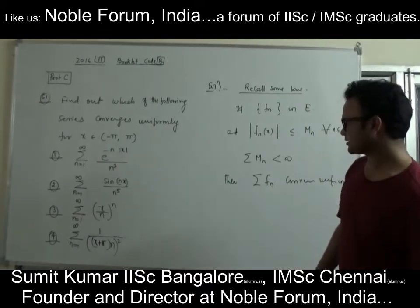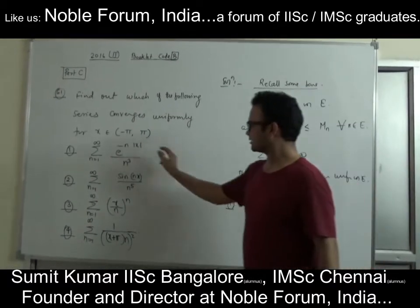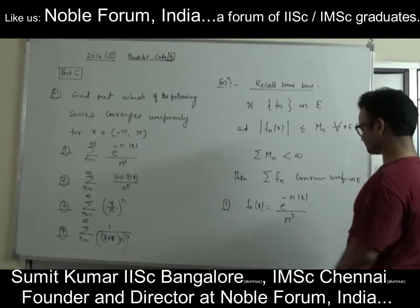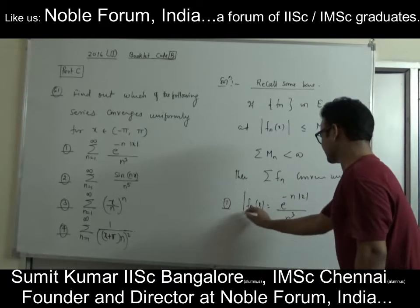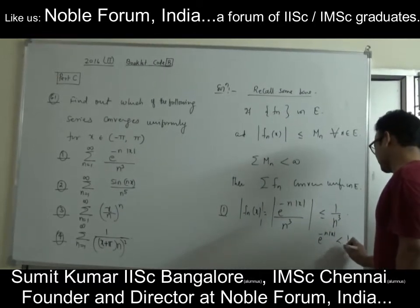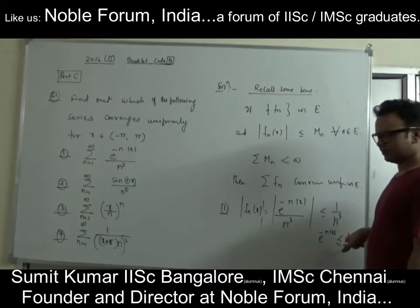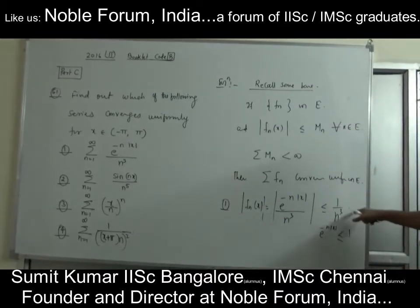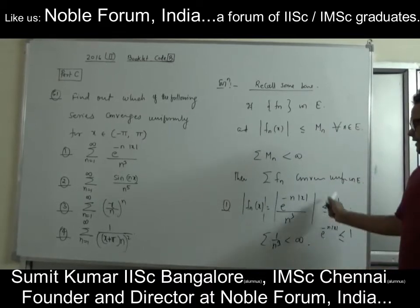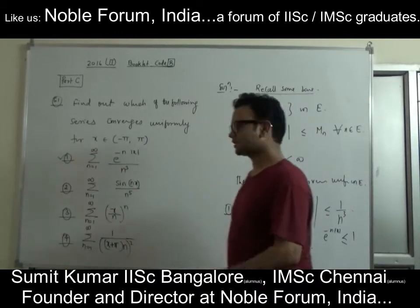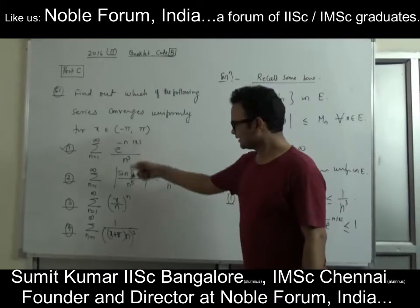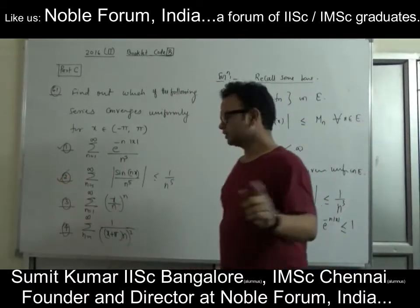The theorem I'm going to use is the M-test: if you have a sequence of functions on some space E, and |f_n(x)| ≤ M_n for all x in E, and the series ΣM_n converges, then the series converges uniformly. That's the M-test — please go through it. For the first option, f_n(x) = e^(−nx)/n^q. Taking the modulus, since e^(−nx) ≤ 1, we get |f_n(x)| ≤ 1/n^q, and this series converges, so the first series converges uniformly.